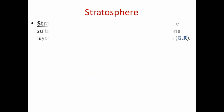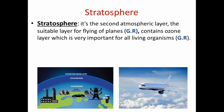The stratosphere layer is the second layer that follows the troposphere. It is very suitable for flying of planes because the movement of air in this layer is horizontal. It contains the ozone layer, which is very important for all living organisms because it protects them from harmful radiations coming from outer space.